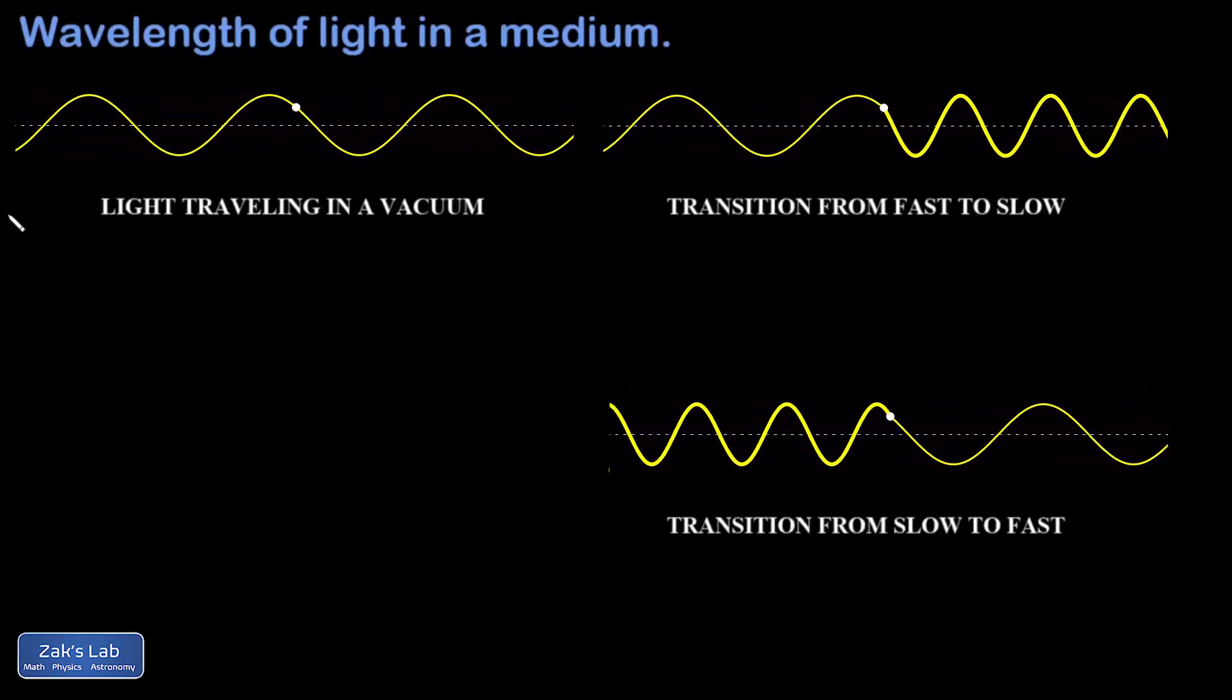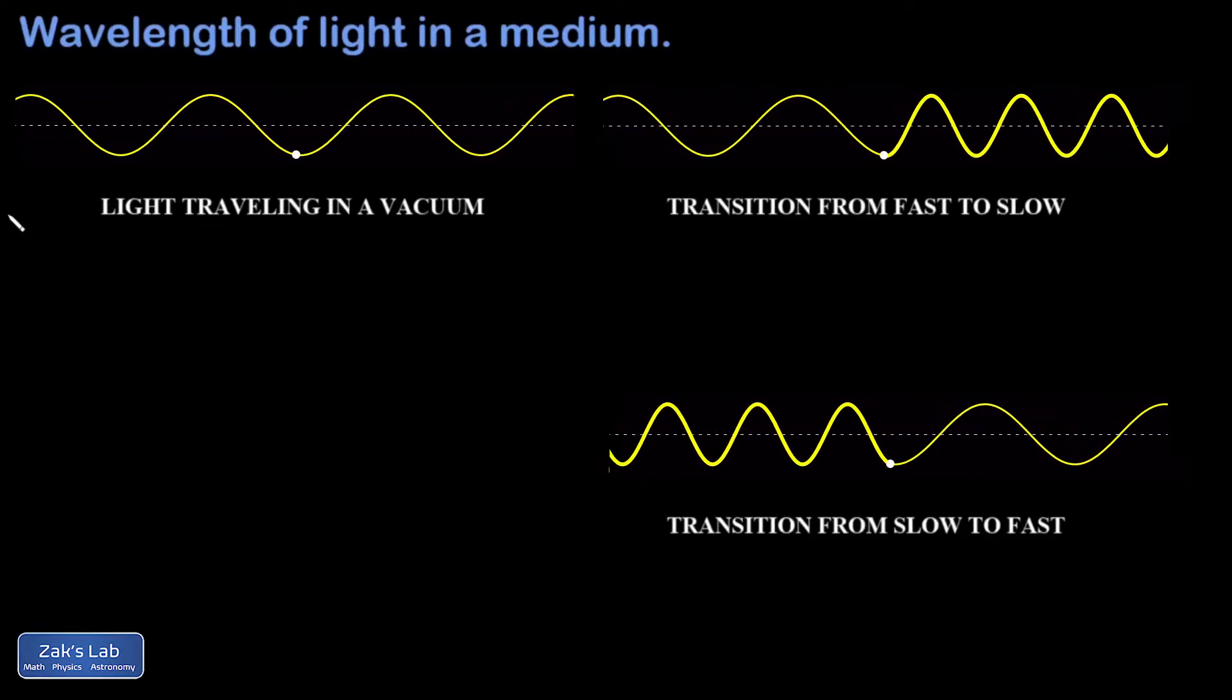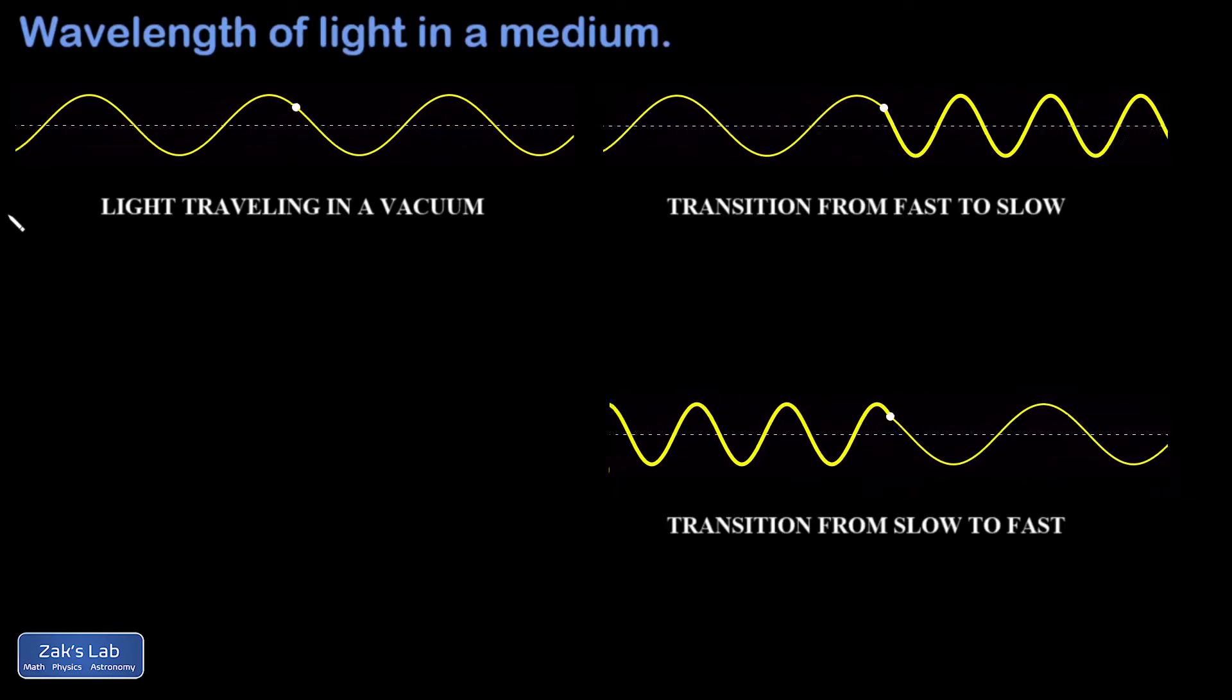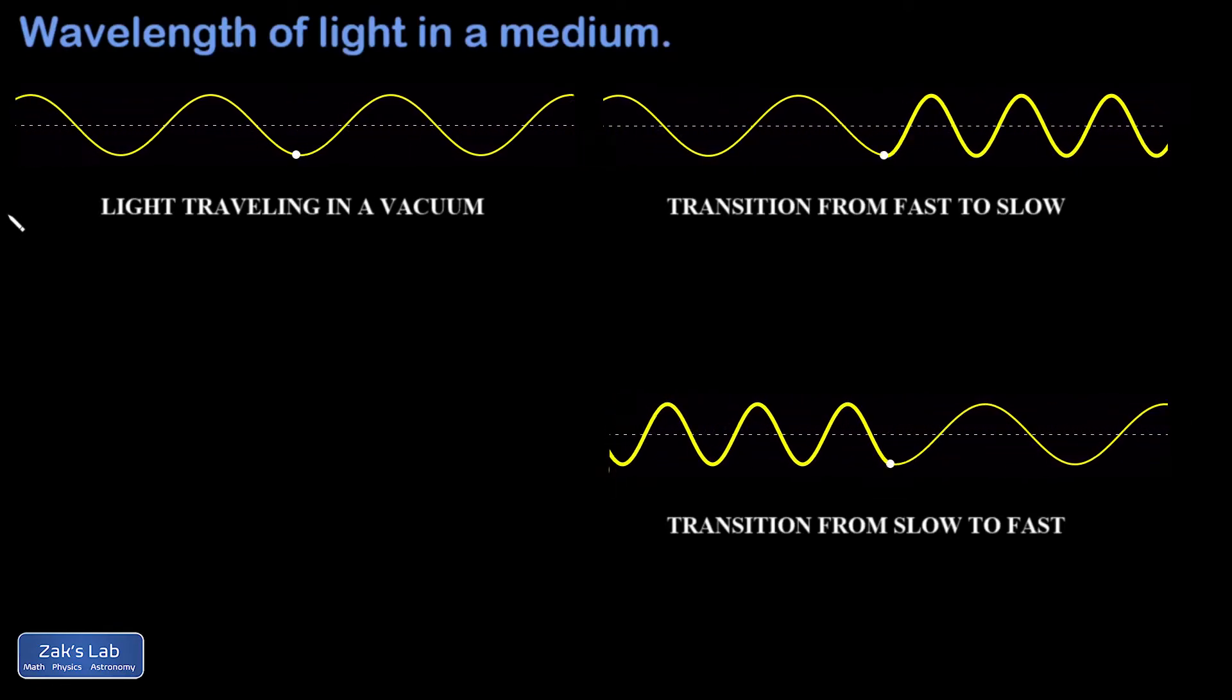In this video, we discuss changes in the wavelength of light when it changes from one medium to another. Then we work a simple example showing how to calculate the wavelength of light in a medium.